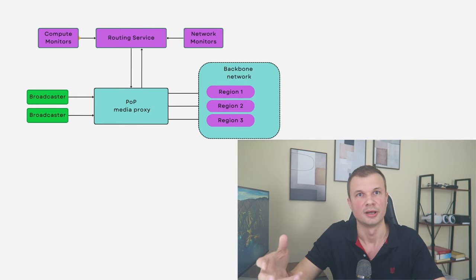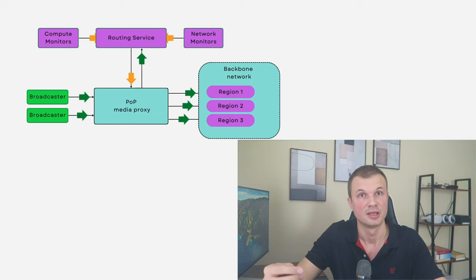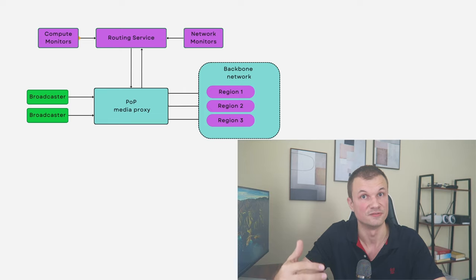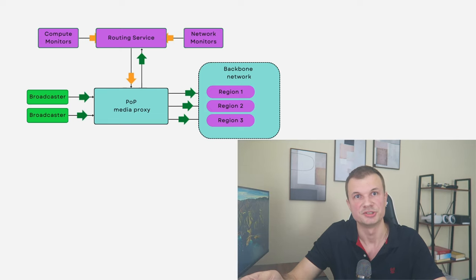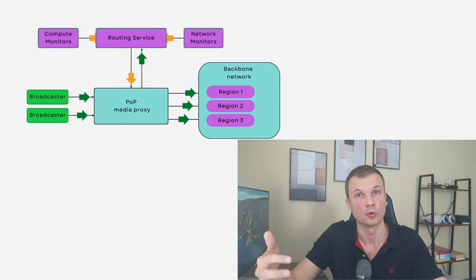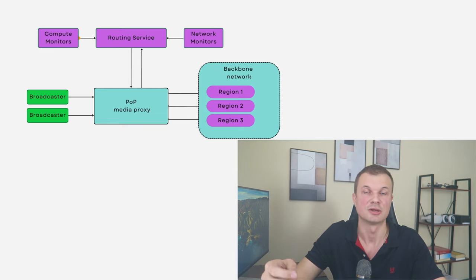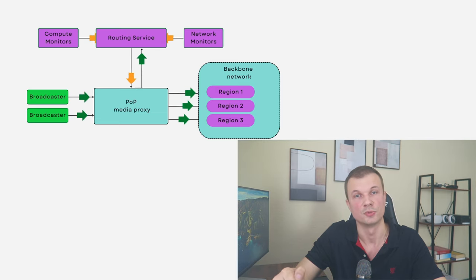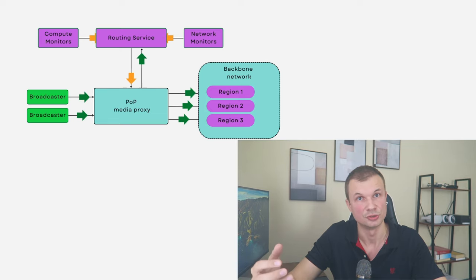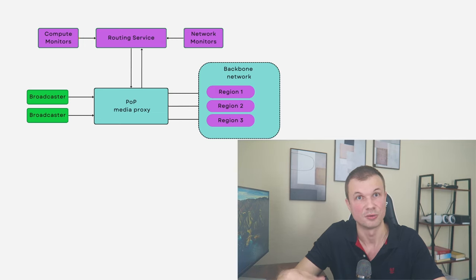We need an intelligent media proxy at the edge pubs to determine where each video segment should go for transcoding and heavy processing. This edge media proxy needs knowledge about the state of multiple core regions — monitoring both compute and network metrics, since this is both compute-heavy and network-heavy. Once that information is fed into the pub media proxy, it knows where to route the traffic.